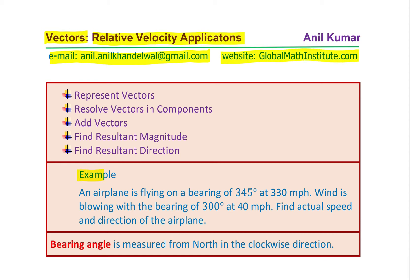We'll begin with an example: an airplane is flying on a bearing of 345 degrees at 330 miles per hour. Wind is blowing with a bearing of 300 degrees at 40 miles per hour. Find the actual speed and direction of the plane.